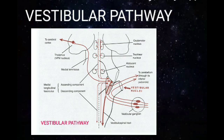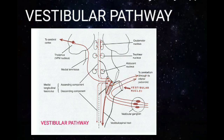The vestibular nerve then terminates at the vestibular nuclei. The second order neurons are the neurons of the four vestibular nuclei complex. They project to the cerebellum via the inferior cerebellar peduncle, and also to the motor nuclei of the 3rd, 4th, and 6th cranial nerves. These connections to the 3rd, 4th, and 6th cranial nerves are through the medial longitudinal fasciculus, and again to the anterior horn cells of the spinal cord.